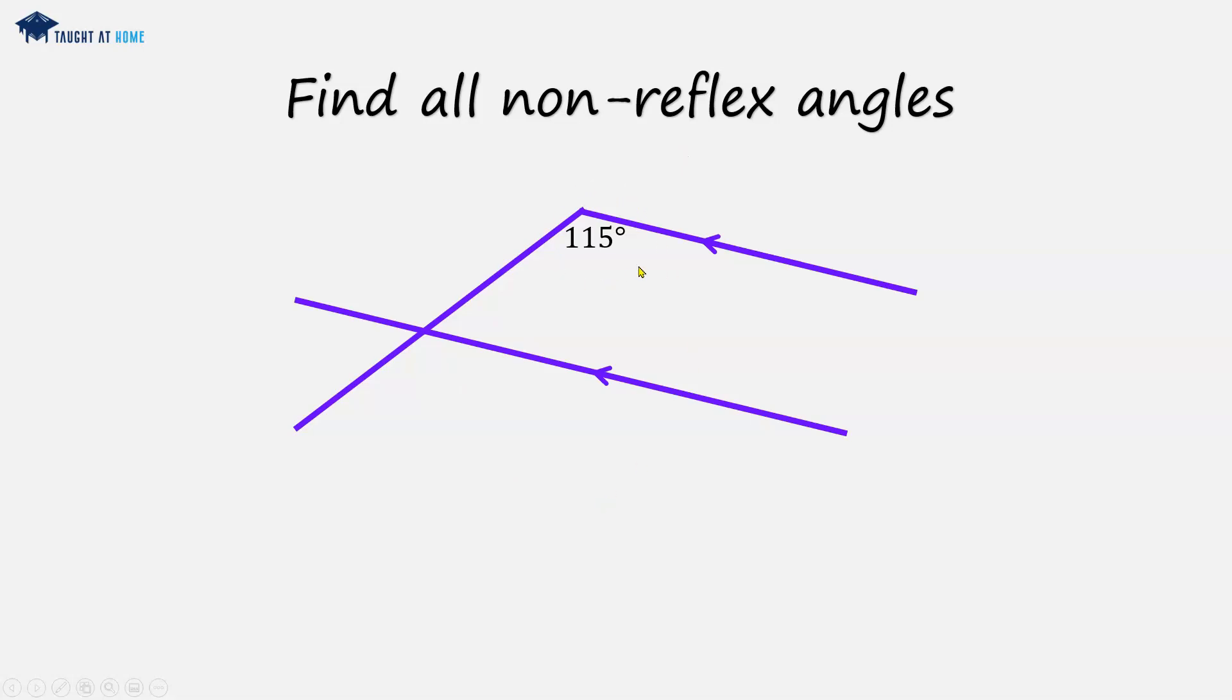So what we can see is this angle here is the alternate of this angle, and this angle here is the corresponding angle of this angle here. So let's go for this.